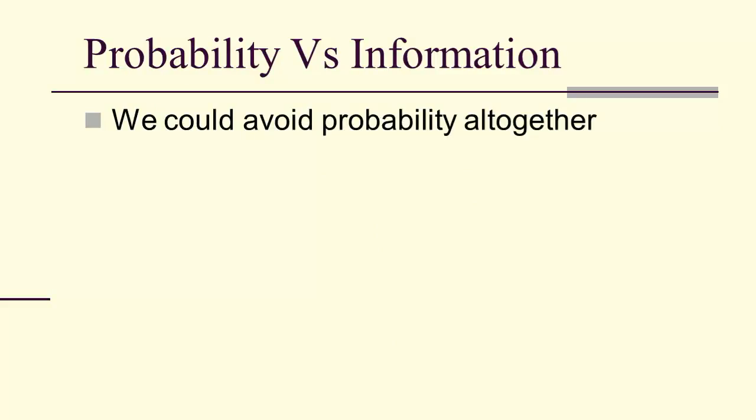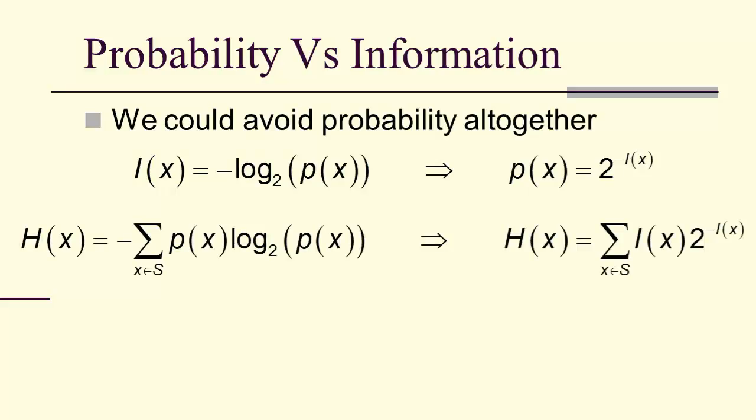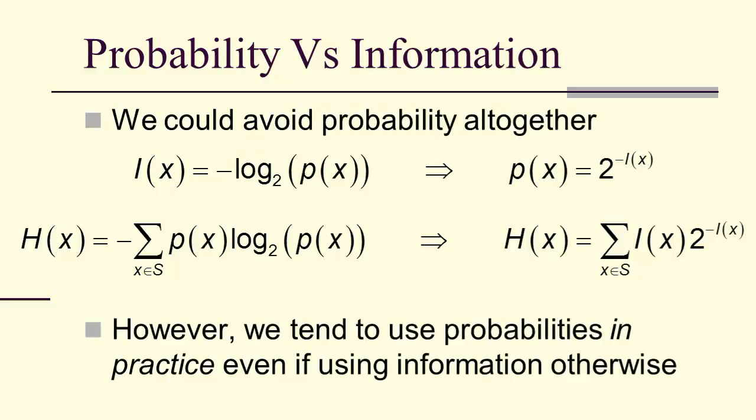We could probably avoid probability altogether. For instance, we could look at information instead of as a function of probability. We could say probability is a function of information. Entropy could be expressed completely in terms of surprisal or self-information. However, in practice, we use probabilities. Information is nice and a very good concept, but what we actually do when we are working with data tends to be probabilities or, in particular, proportions.